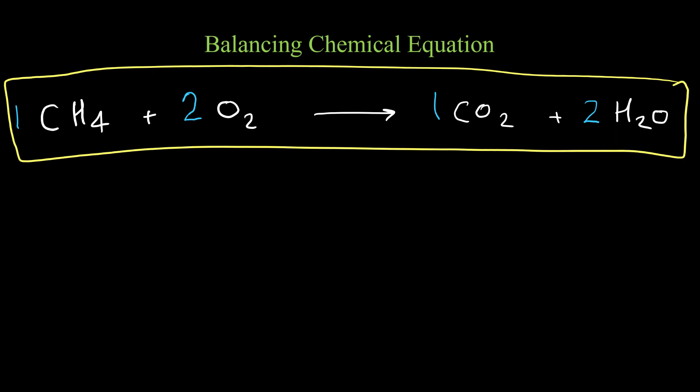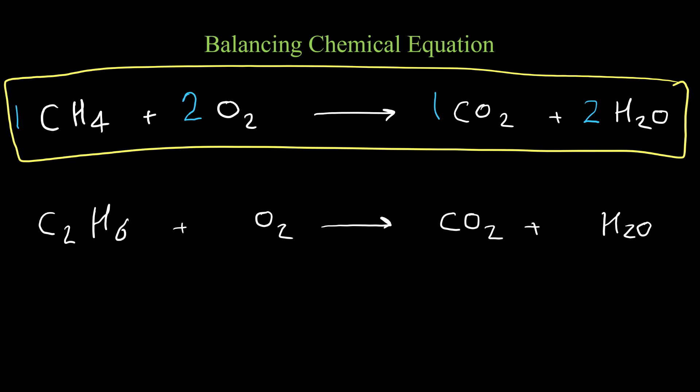Let's have another combustion example: combustion of C₂H₆, or ethane. Starting with carbon — on the left we have two carbon, so I put two in front of carbon dioxide on the right. Ethane has coefficient one. Then there are six hydrogen on the left and only two on the right, so I put three in front of water. Three times two is six hydrogen on both sides.